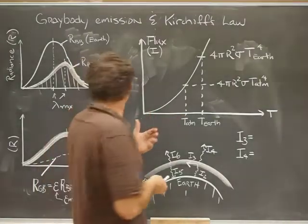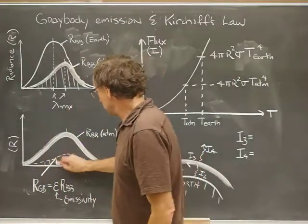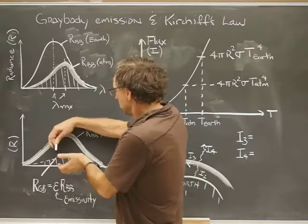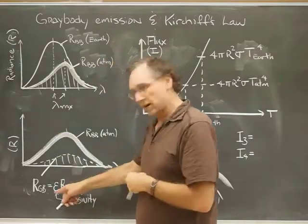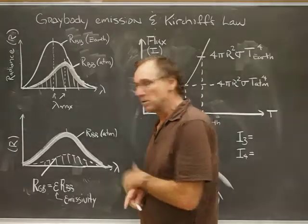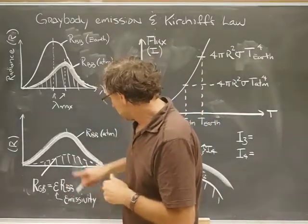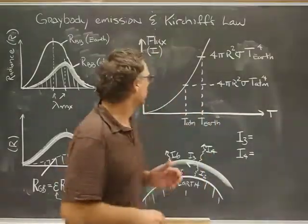What is the flux going to look like when I have a gray body? The area under this curve is obviously going to be just the area under the first curve multiplied by that constant emissivity. So in this case, I'm looking at an emissivity of about 0.4.